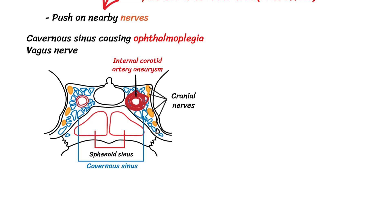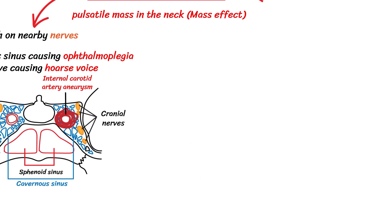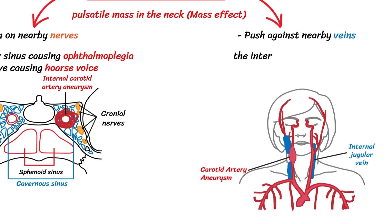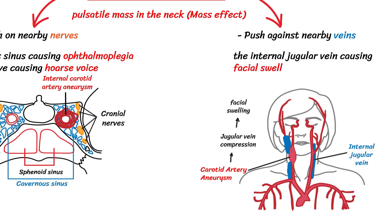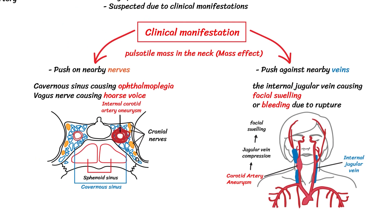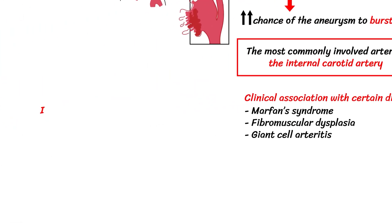The aneurysm can also push against the vagus nerve, causing hoarse voice. It can push against the internal jugular vein, causing compression and facial swelling from backflow. Finally, another clinical manifestation is that the aneurysm can rupture and bleed. Diagnostic tests include carotid angiography, which will reveal the aneurysm.